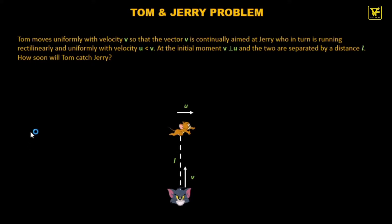Tom moves uniformly with velocity v so that the vector v is continually aimed at Jerry, who in turn is running rectilinearly and uniformly with velocity u, which is less than v. So Tom is trying to catch Jerry. At the initial moment v is perpendicular to u and the two are separated by a distance L. How soon will Tom catch Jerry?